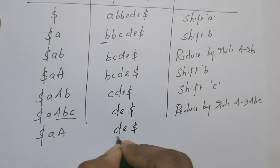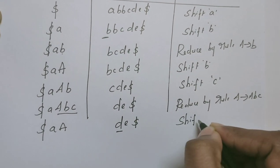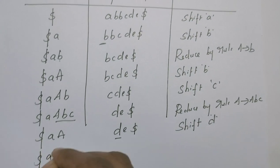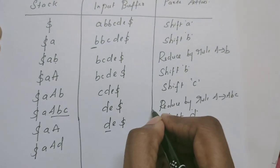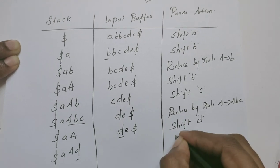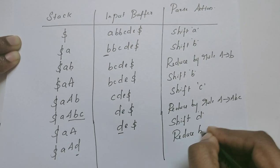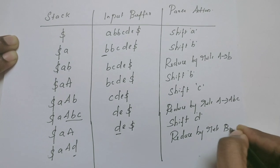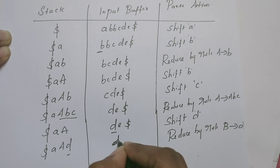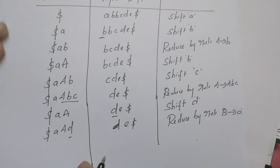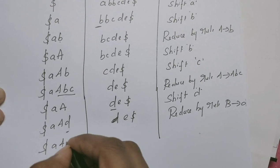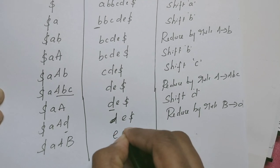Next, this D is to be shifted. Shift D. Stack contains dollar, A, A, D. Then in the reverse process, this D is reduced to B. Reduce by the rule B derives D. Stack contains dollar, A, A, B. Input buffer now contains E, dollar.